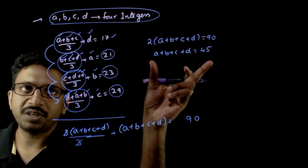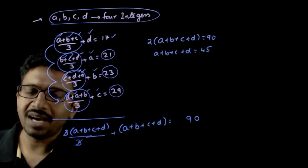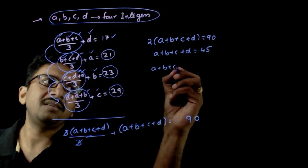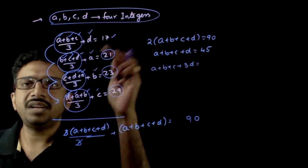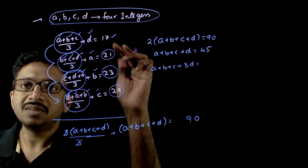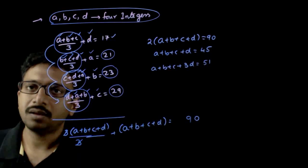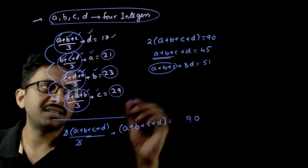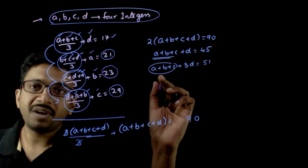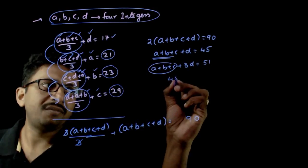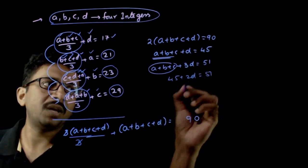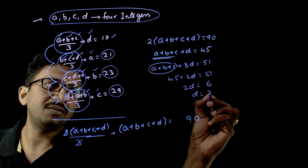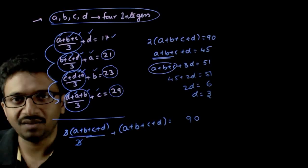Now, from this result, you can find each variable. From the first expression, taking LCM: a + b + c + 3d = 3 × 17 = 51. Since a + b + c = 45 − d, substituting gives 45 − d + 3d = 51, so 45 + 2d = 51, giving 2d = 6 and d = 3. You have found one of the numbers: d = 3.